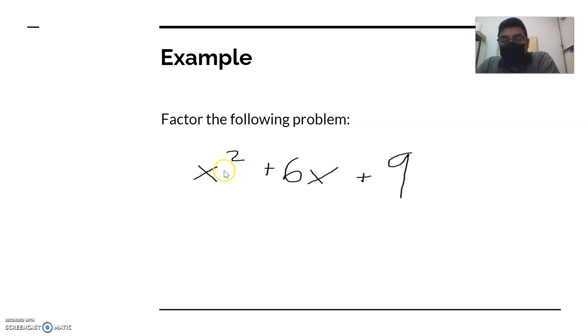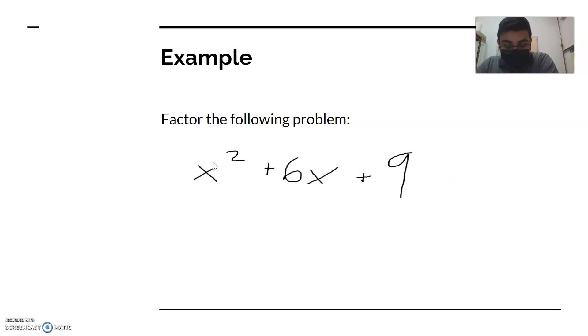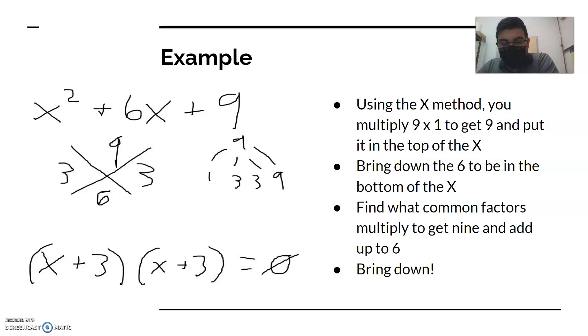So to do this, these two numbers 9 and x would be multiplied times each other. So 9, remember anything in front of x is multiplied by 1. There's an invisible 1 in front of the x. So 1 times 9 is 9, you'd put that on the top of the X. On the bottom, you just bring down the number in the middle straight to the bottom.